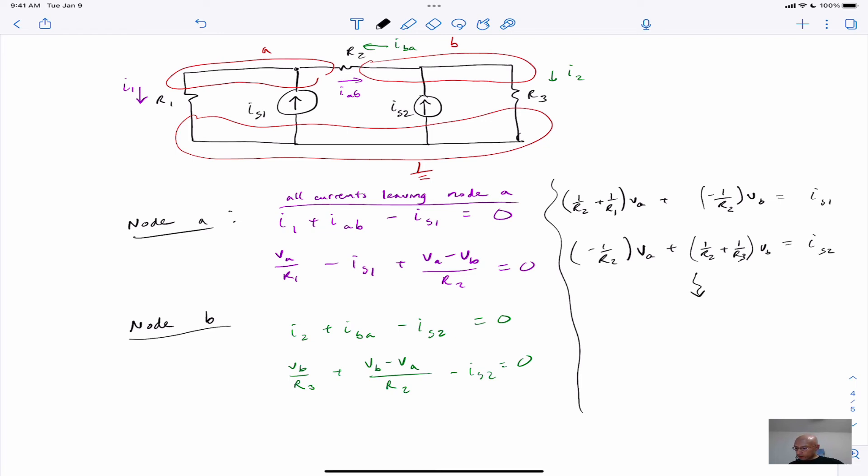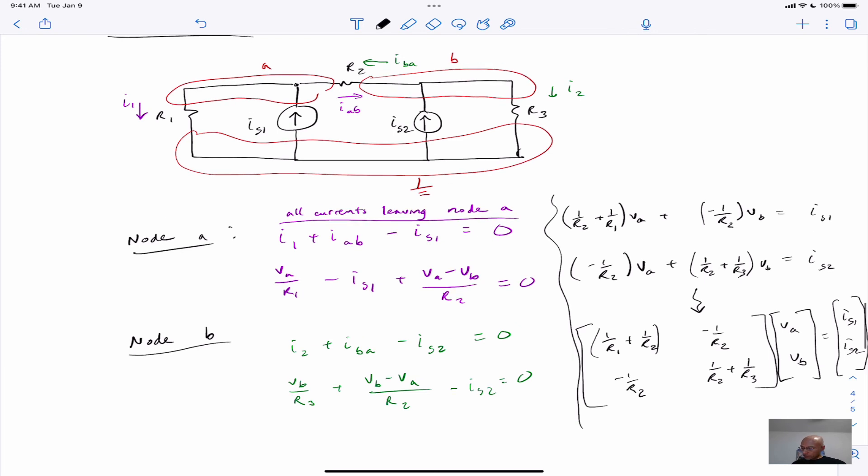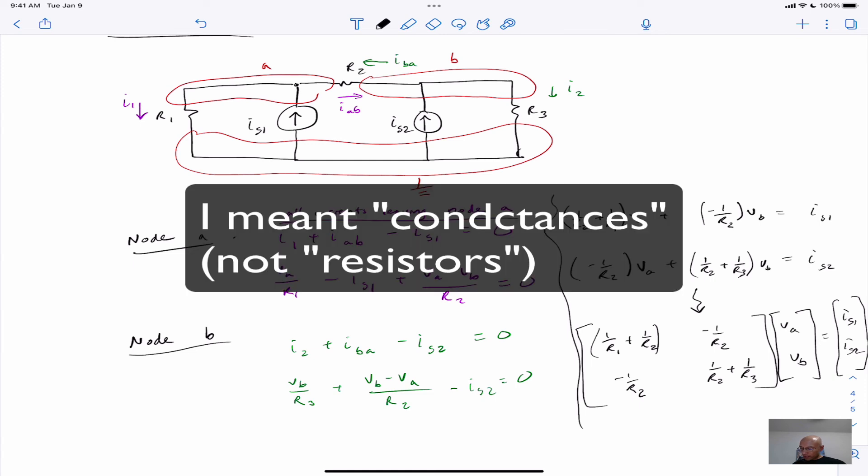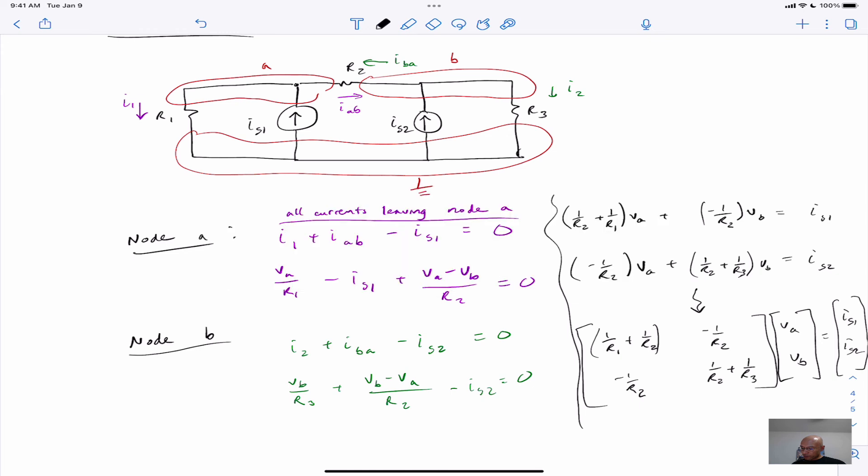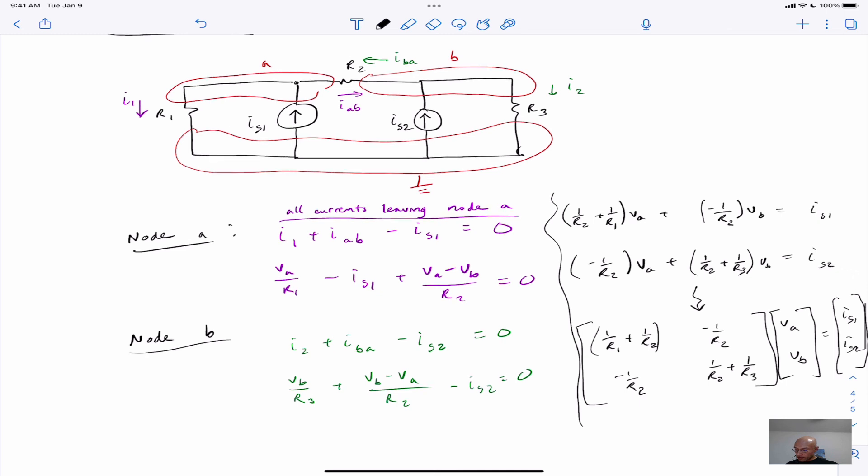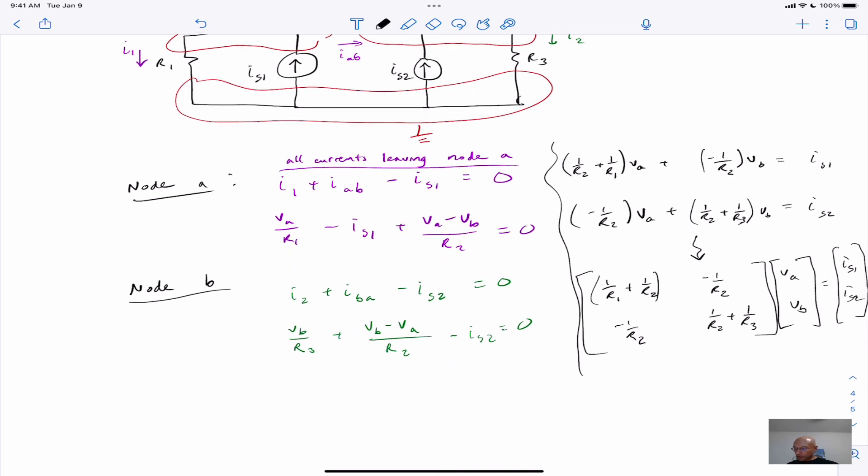And now we turn this into a matrix equation. And you'll see that it works out just like what I told you before. So there we have it. You have these diagonal elements. And you can see that the diagonal elements are all the resistors that connect to each node. So the first diagonal element has all the conductances that connect to node A. The second diagonal element has all the conductances that connect to node B. And they're positive. And then on the off diagonal, we have the conductances that connect nodes A and B. And they're negative.